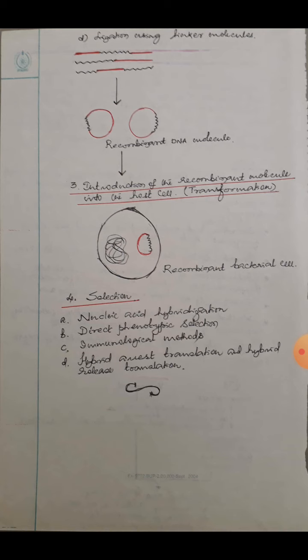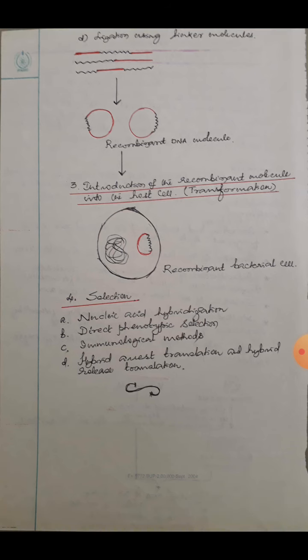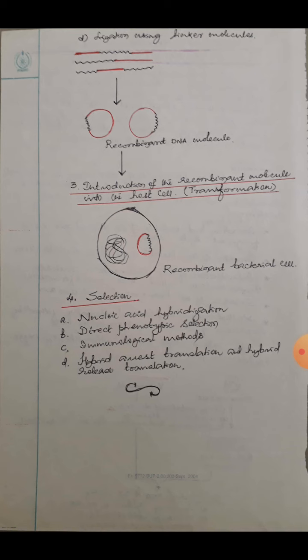Your recombinant vector or recombinant DNA molecule is ready, and this needs to be introduced into the host cell — that is, introduction of the recombinant molecule into the host cell. This is the next step, and the process is called transformation. Here we have a bacterial cell which serves as the host, and your vector containing the DNA of your choice is put into this host cell. Later, you will select those bacterial cells which have taken the vectors containing the DNA of your choice. The next step is selection, which can be done either by nucleic acid hybridization, direct phenotypic selection, immunological methods, hybrid arrest translation, or hybrid release translation.